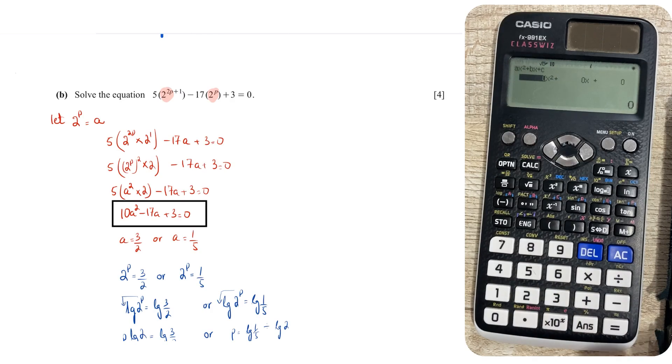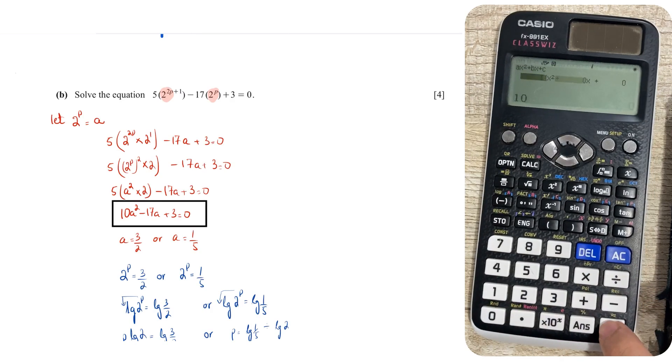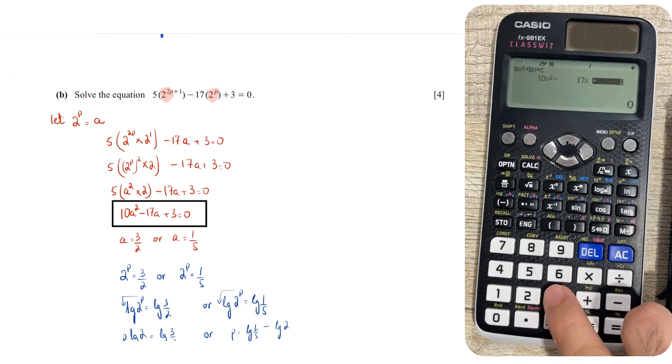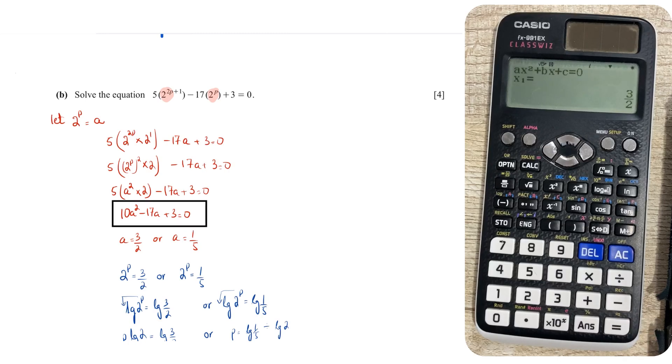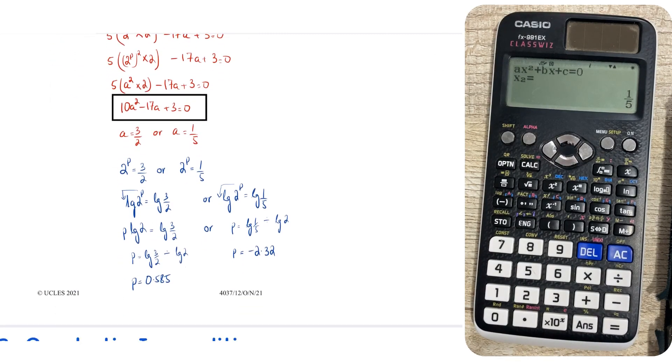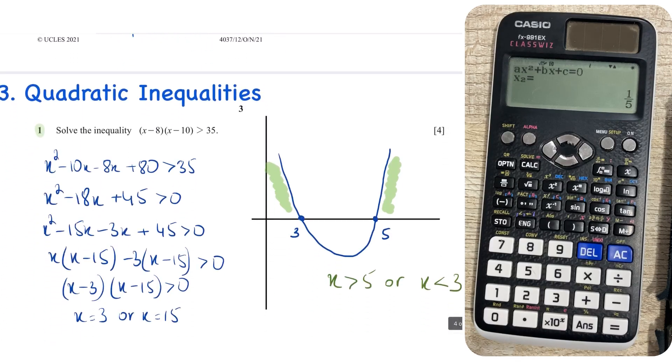So coefficient of x squared, which in this case is A squared, is 10, and then the coefficient of x, which in this case is A, is minus 17, then the constant is 3. Press equals, press equals again, wait for the magic. You can see that A equals 3 upon 2, press it again, and you can see that A equals 1 upon 5. So that means I've done it correctly, and I can move on knowing that my answer is correct.